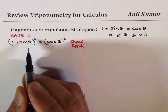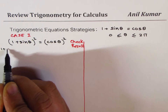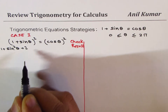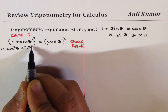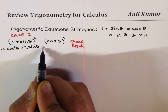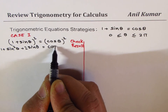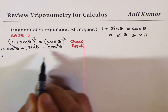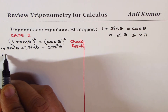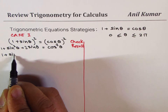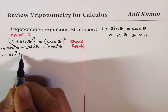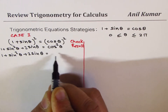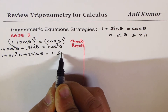Squaring the left side gives 1 plus sine squared theta plus 2 sine theta, and on the right we have cos squared theta. We can write cos squared theta as 1 minus sine squared theta, so we get: 1 plus sine squared theta plus 2 sine theta equals to 1 minus sine squared theta.